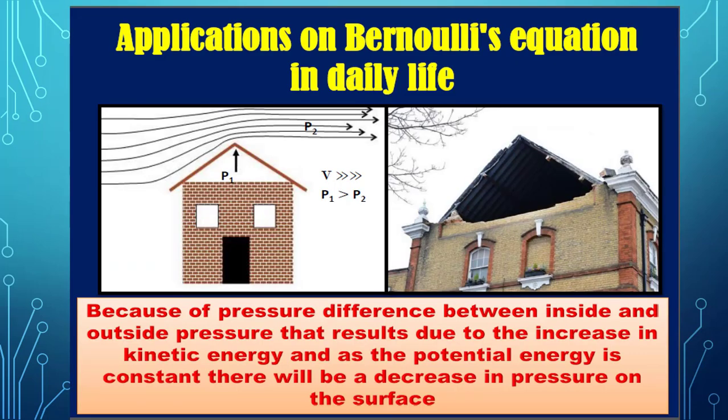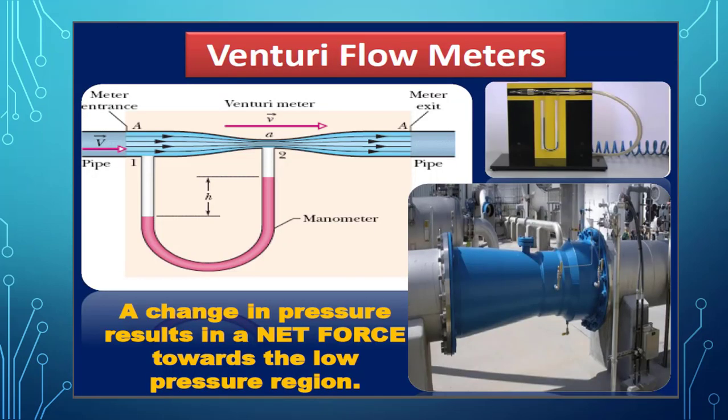Another application of Bernoulli's equation in real life. Because of pressure difference between inside and outside pressure that results due to increase in kinetic energy, and as the potential energy is constant, there will be a decrease in pressure on the surface. In the tornado, because the wind has high velocity, it has low pressure inside the tornado. It can destroy any building by this way.